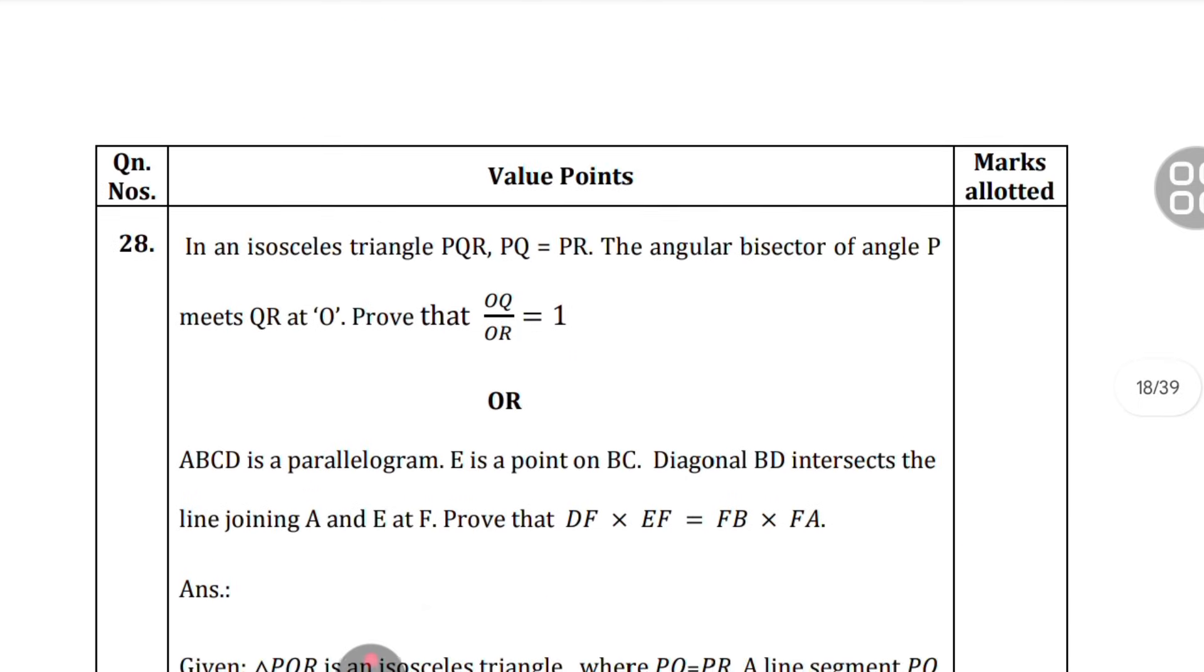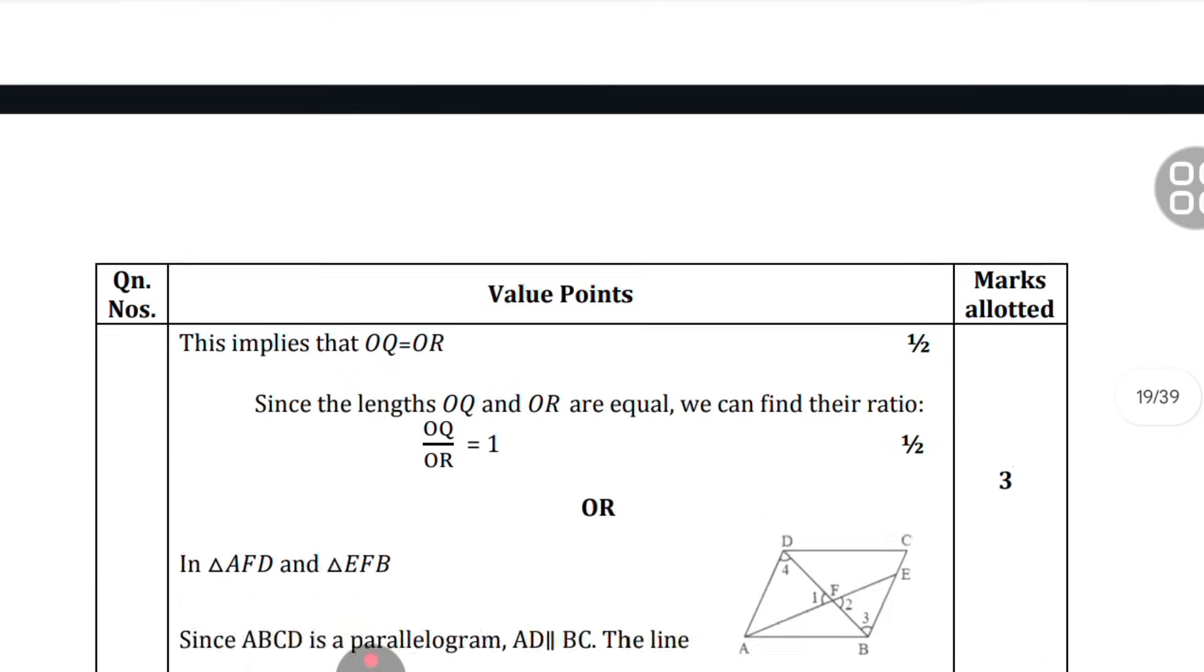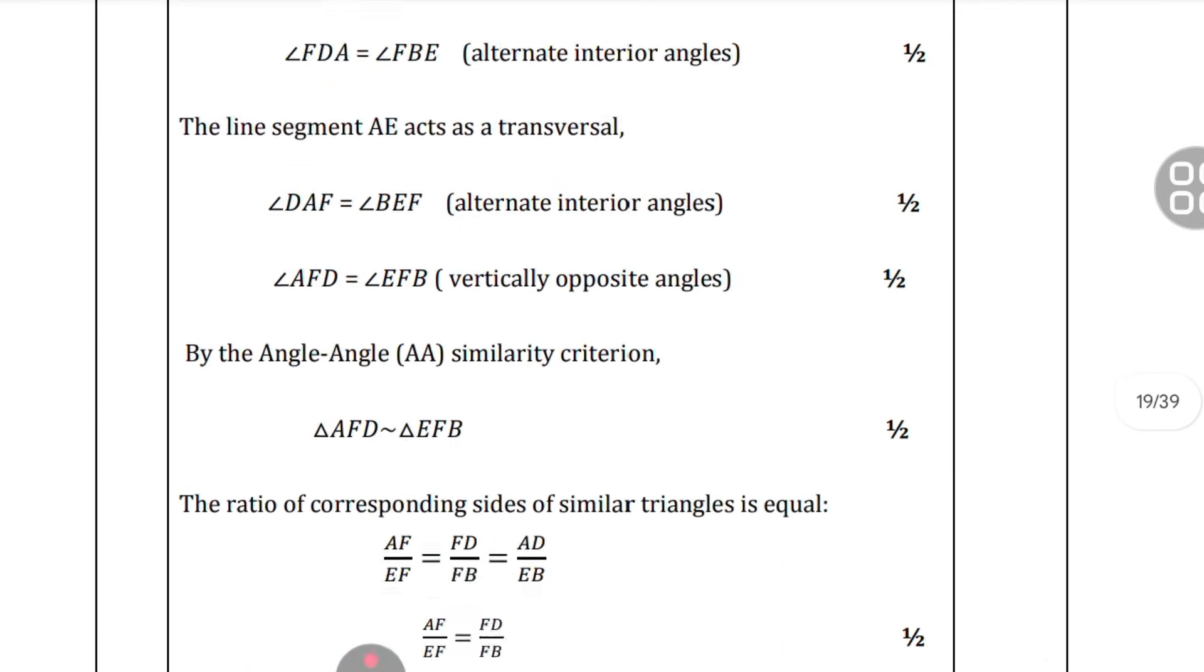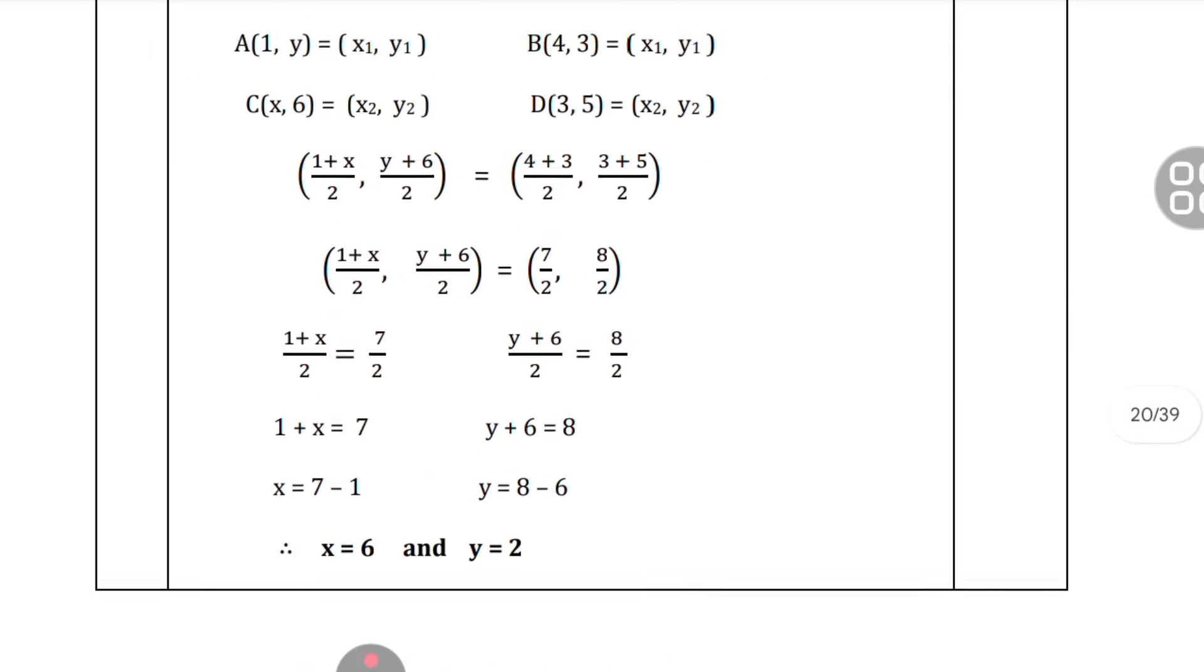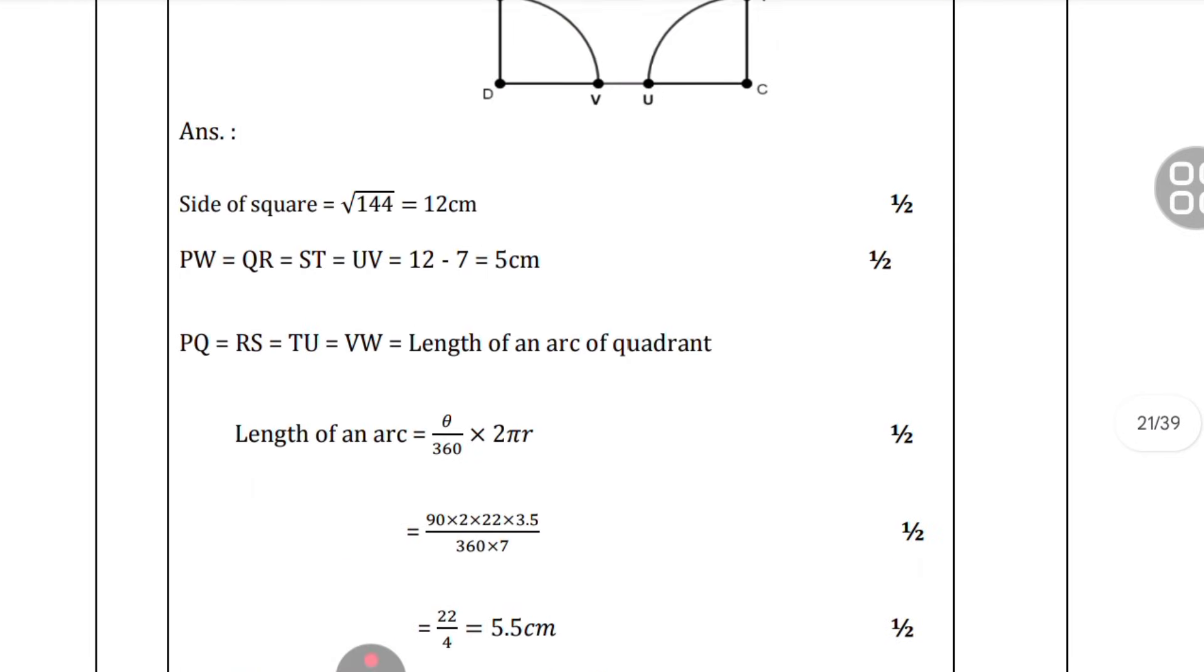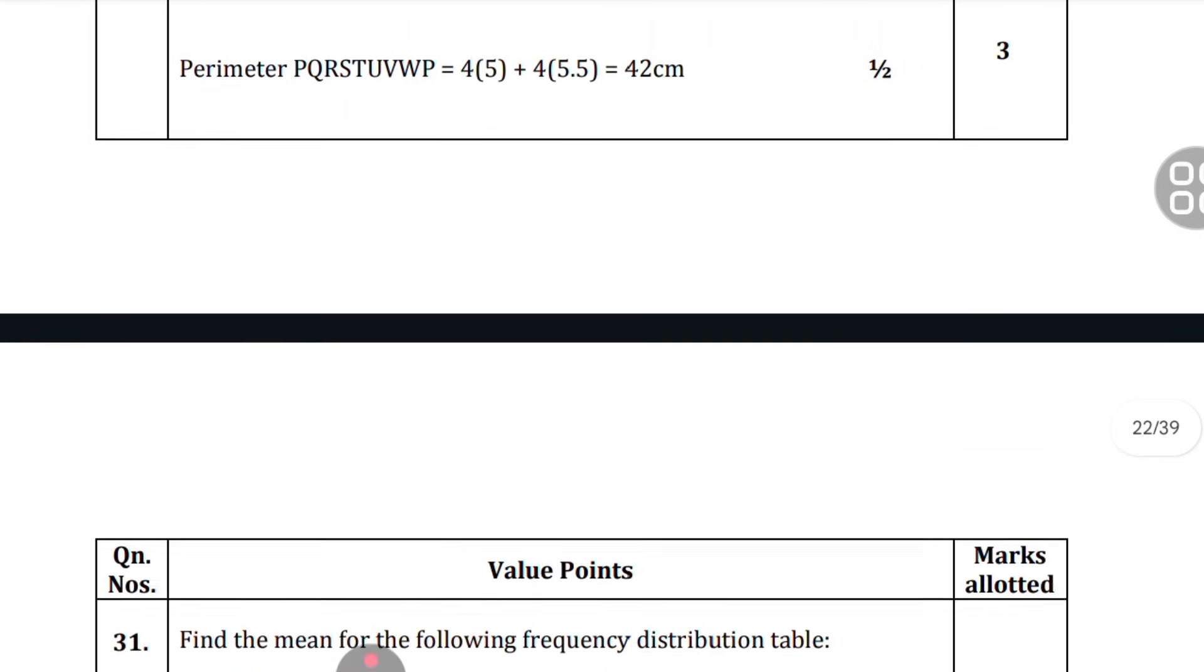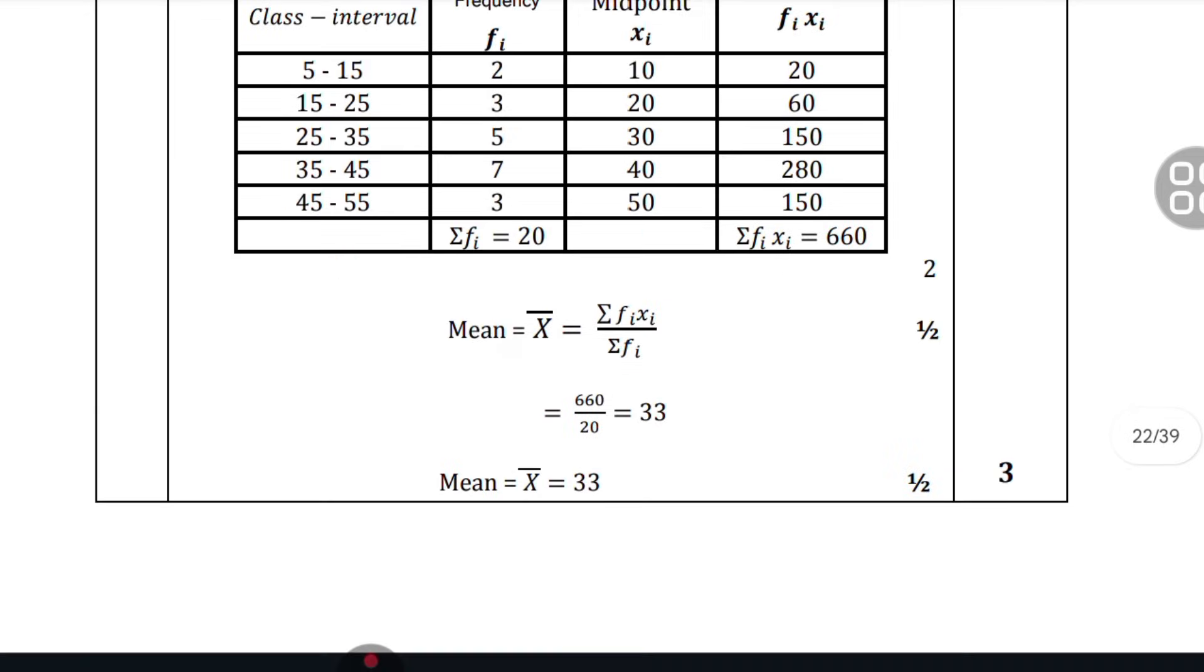You'll be getting the full marks. You can see the half marks distribution at the right-hand side. You have to write pointwise only, then only you will get half marks. If you skip that step, you'll be losing the marks for that step.